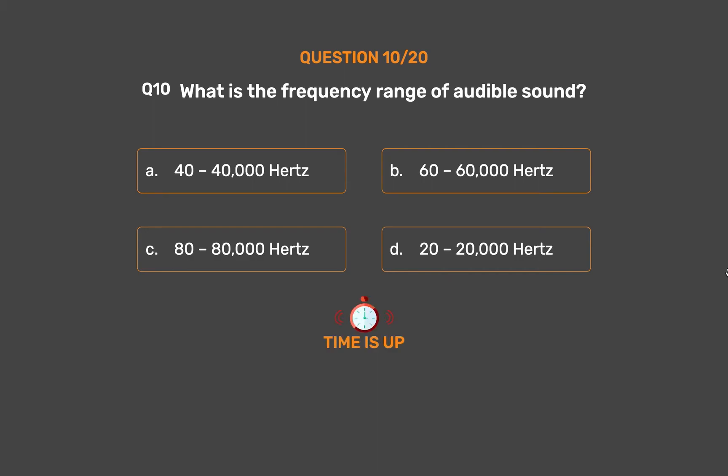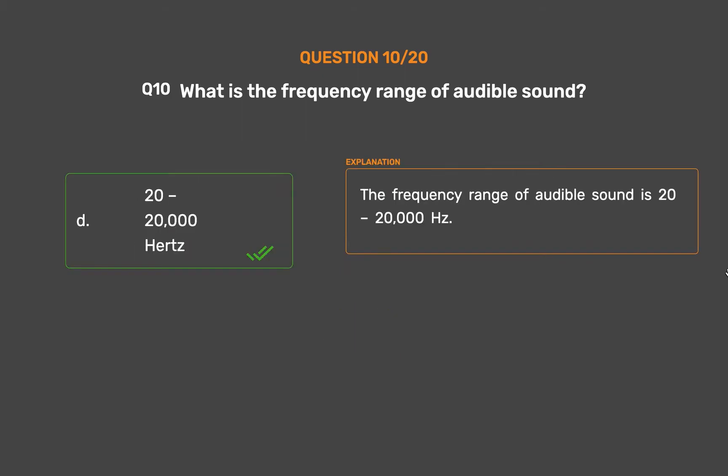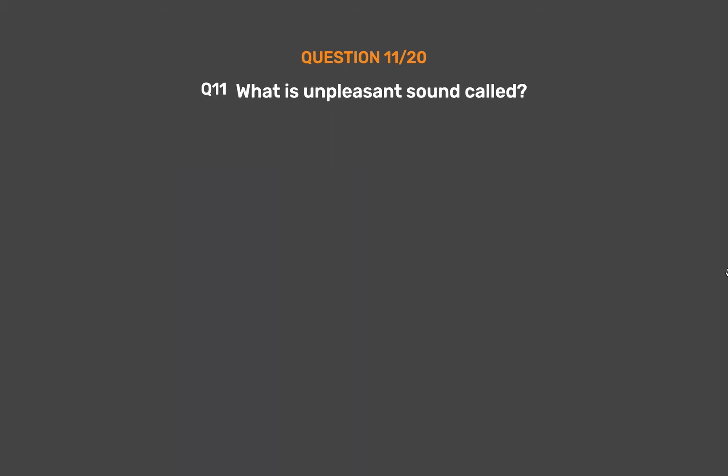The correct answer is Option D, 20 to 20,000 hertz. The frequency range of audible sound is 20 to 20,000 hertz.